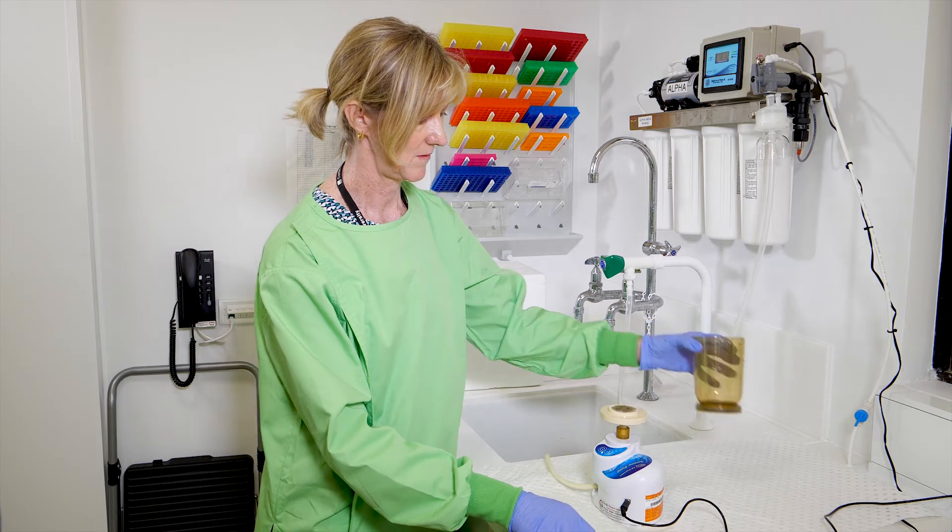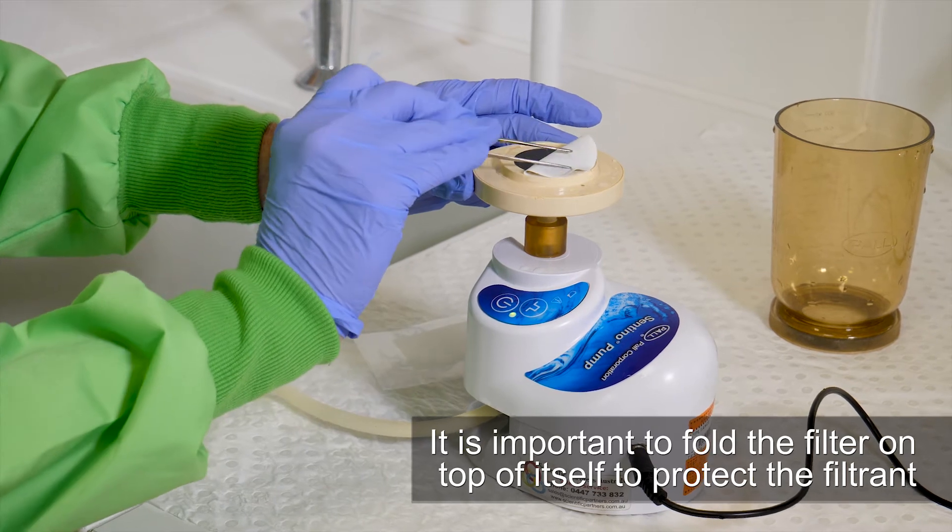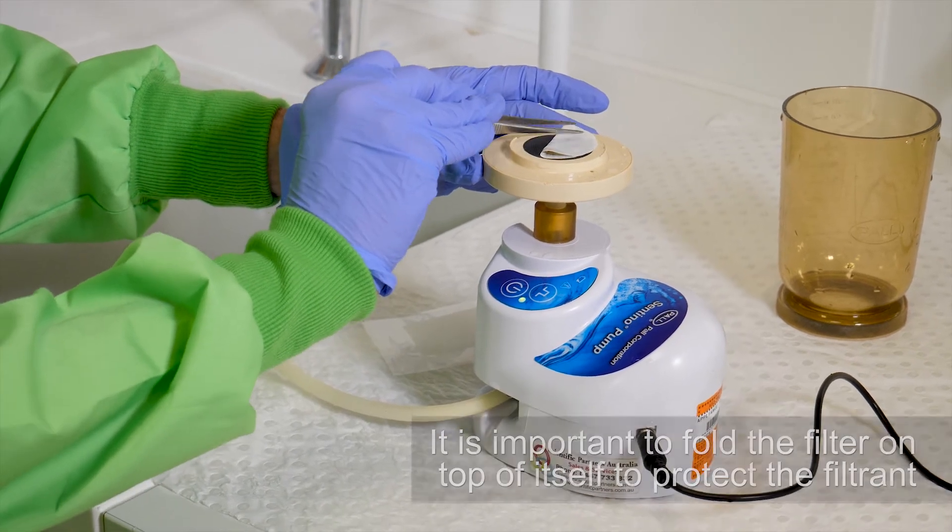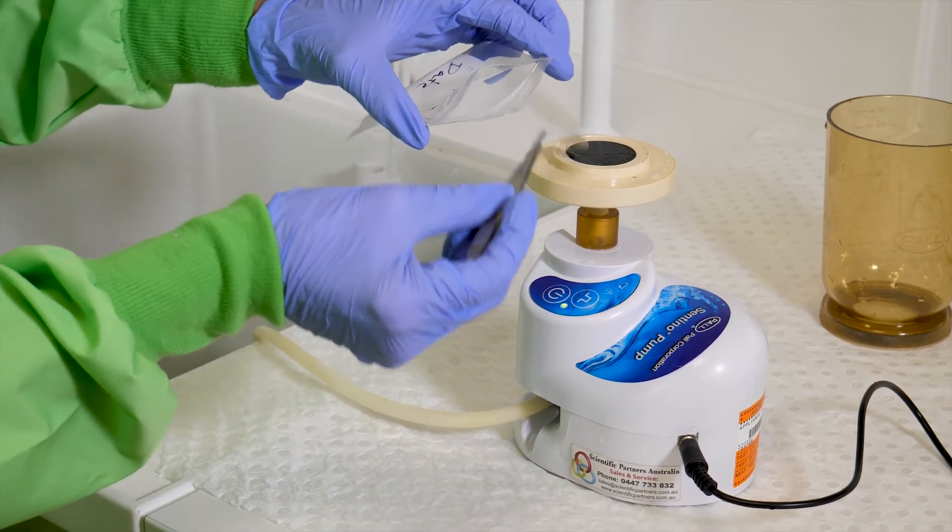Remove the funnel from the pump. Use clean forceps to fold the filter membrane on the base and crease it by pressing gently down. Place the folded membrane into a sample bag labeled with a unique sample name and the date.